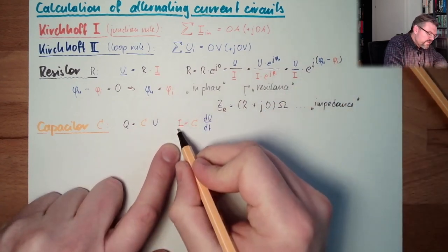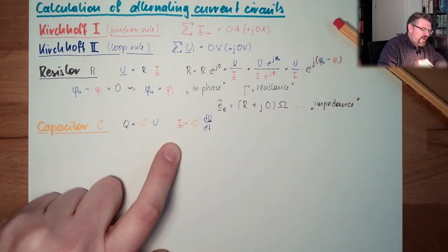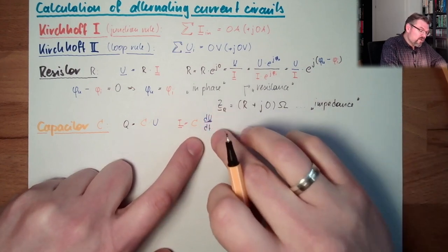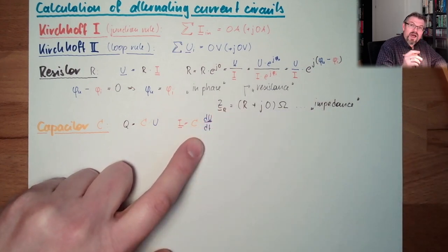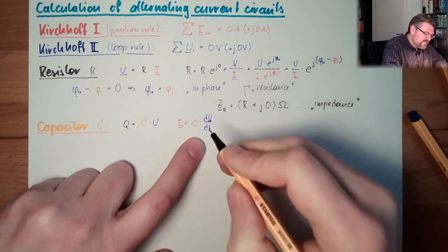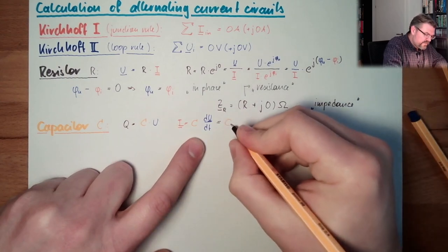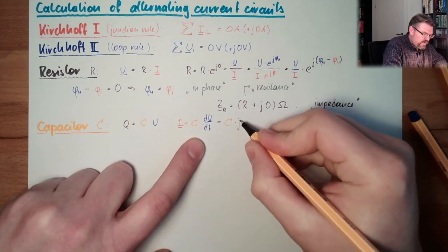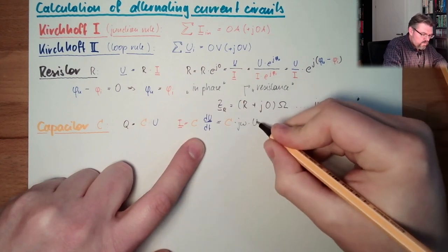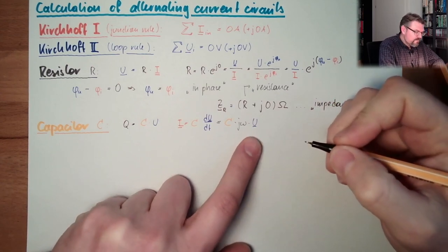And now, extend to alternating current. And now, please remember rules of what we talked about when we said, okay, when we derive a complex number, we have to multiply with J omega. So actually, this is exactly the same as C, capacity, multiplied by J omega, multiplied by U. I'm already done.